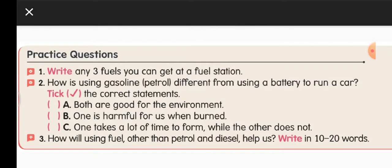Practice question one: write any three fuels you can get at a fuel station. A fuel station is like a petrol bunk. You can write: number one — diesel, number two — petrol, number three — CNG, which is compressed natural gas. Second question: how is using gasoline different from using a battery to run a car? Gasoline is a liquid poured in at petrol bunks, whereas a battery is used to move the car and must be charged.